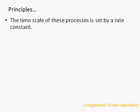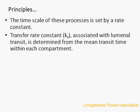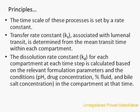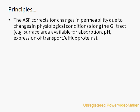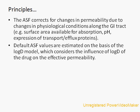The time for movement through these compartments is set by different rate constants — transfer rate constants, dissolution rate constants, and absorption rate constants — which are further refined by applying an Absorption Scale Factor (ASF) for each compartment. The ASF corrects for changes in permeability due to changes in physiological conditions along the GI tract, including surface area available for absorption, pH, and expression of transport or efflux proteins. The model has default ASF values that can be selected.